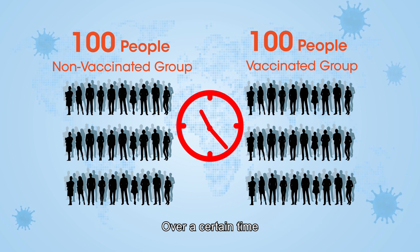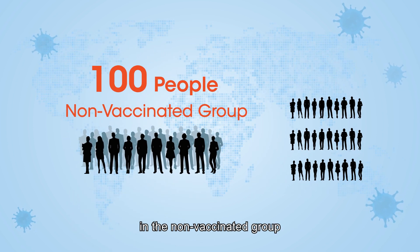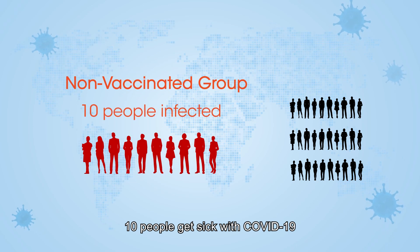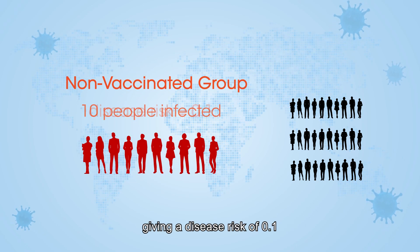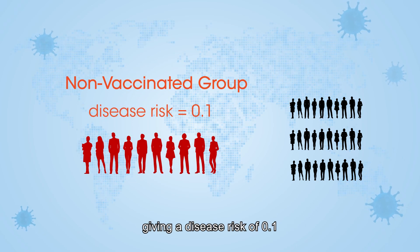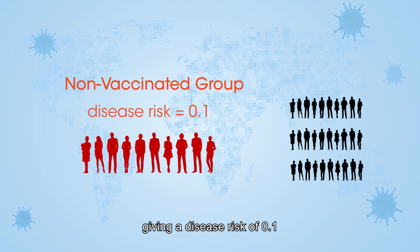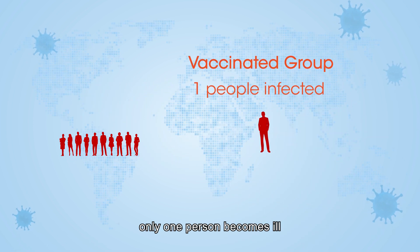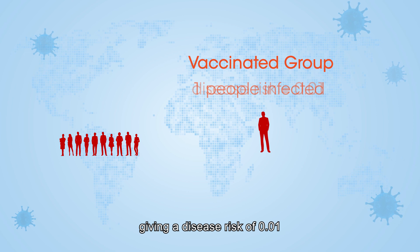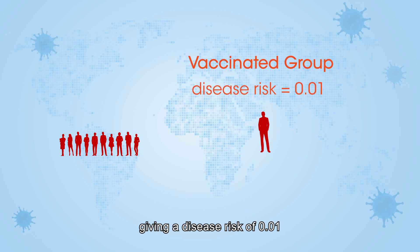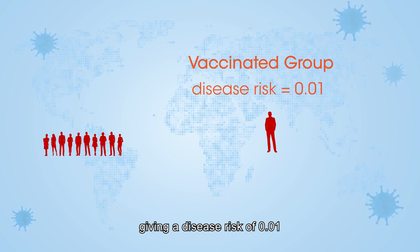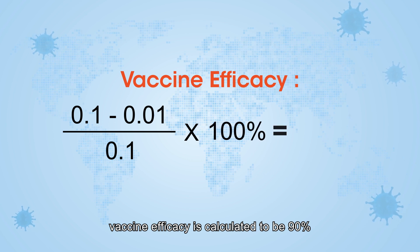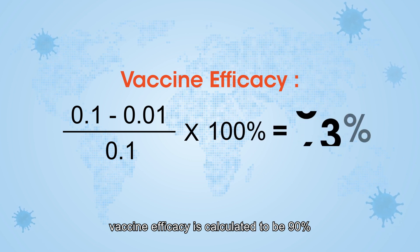Over a certain time, in the non-vaccinated group, 10 people get sick with COVID-19, giving a disease risk of 0.1. In the vaccinated group, only one person becomes ill, giving a disease risk of 0.01. In this example, vaccine efficacy is calculated to be 90%.